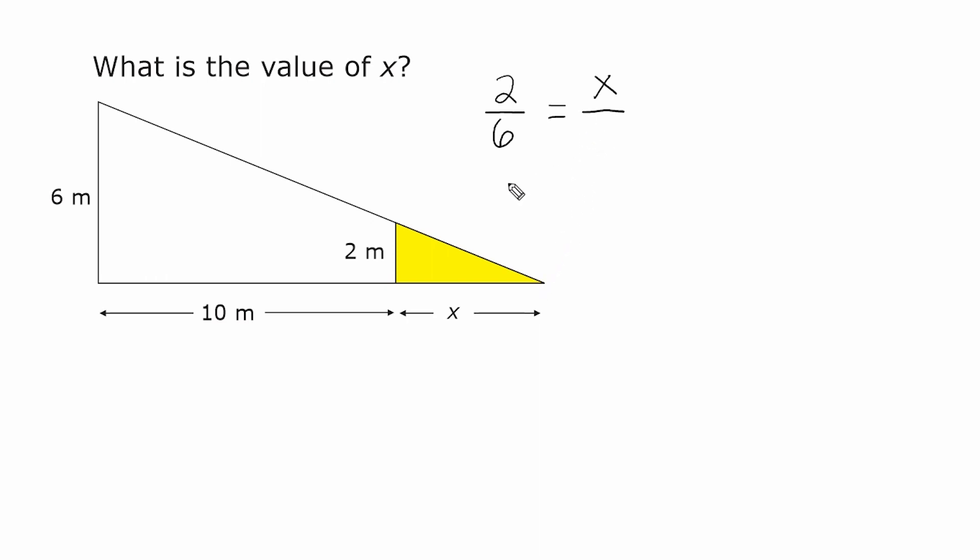But be careful, we cannot put 10 down here because the distance from here to here is not 10. It is 10 plus this x right here. So we have to write 10 plus x on the bottom.